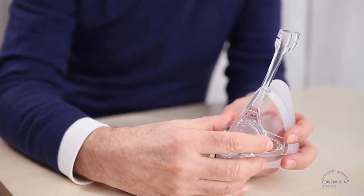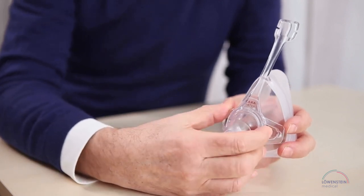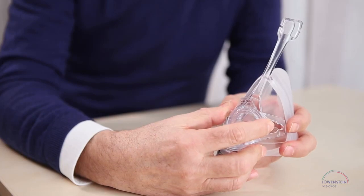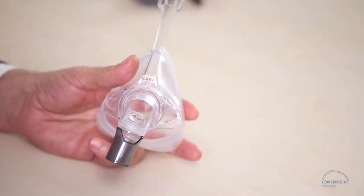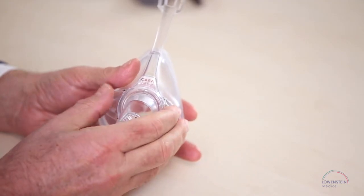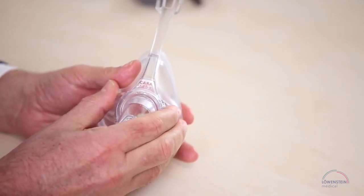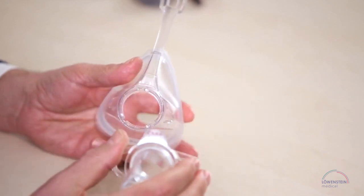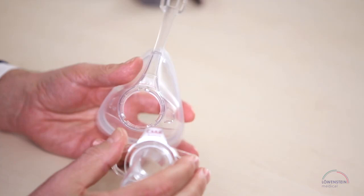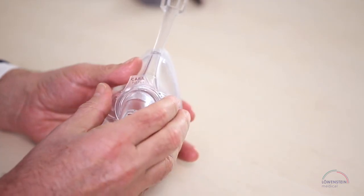You can simply disassemble the plastic parts of the mask for cleaning. Hold the mask body in one hand and the connecting element in the other. Turn the connecting element from 12 o'clock to 11 and pull apart the two plastic pieces. The assembly works the same way in reverse.